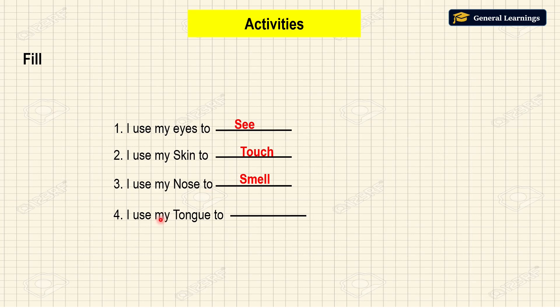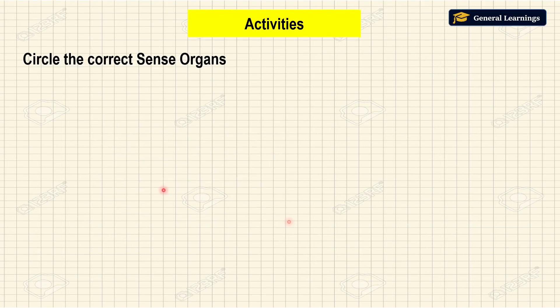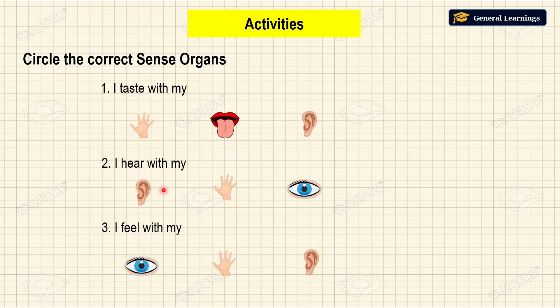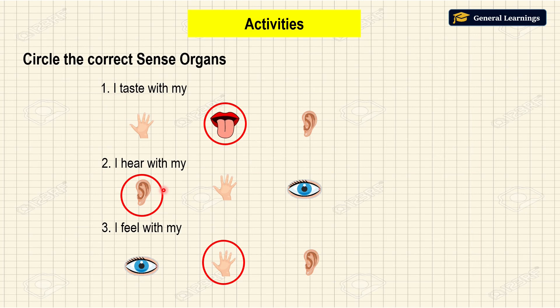I use my nose to smell. I use my tongue to taste. Now we are going to circle the correct sense organ. I taste with my tongue. I hear with my ear. I feel objects with the help of my hand. I hope you understand this concept.